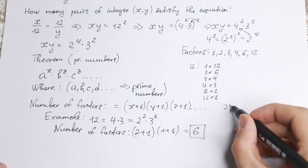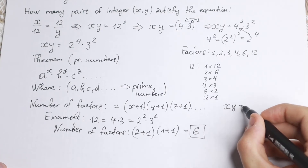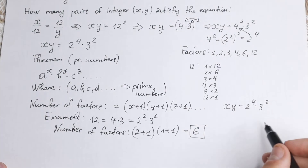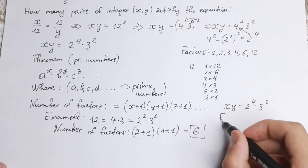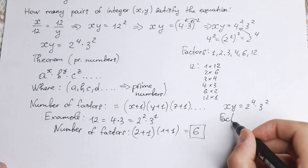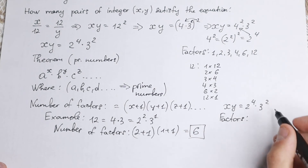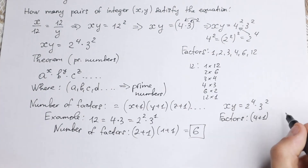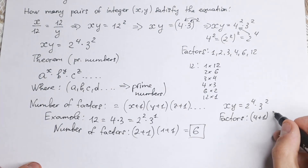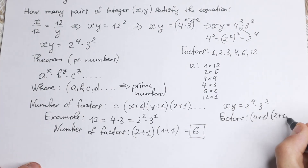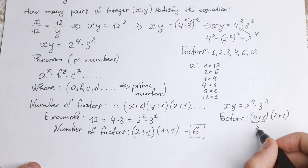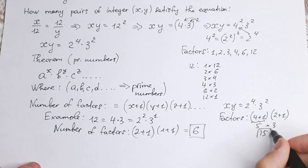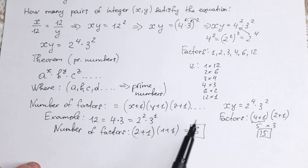Now back to our case: xy equals 2 to the fourth times 3 squared. Using the theorem, the number of factors will be (4+1) times (2+1) — so 5 times 3 equals 15. We have 15 factors.